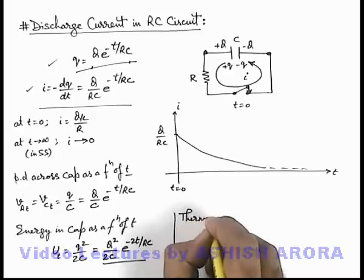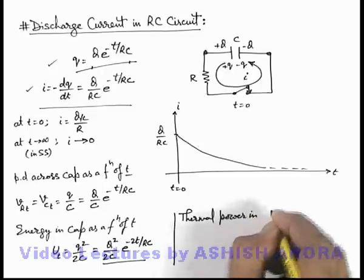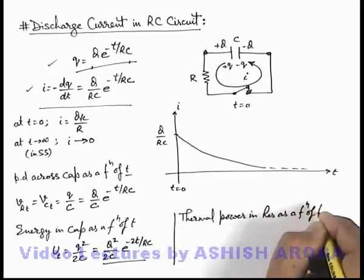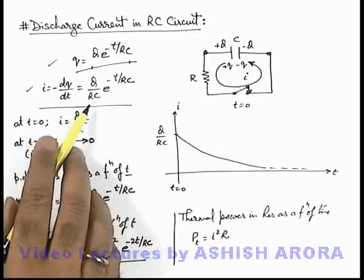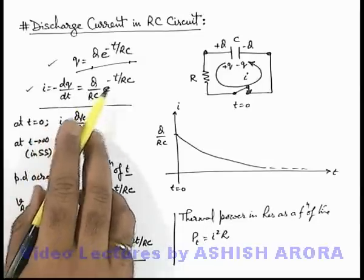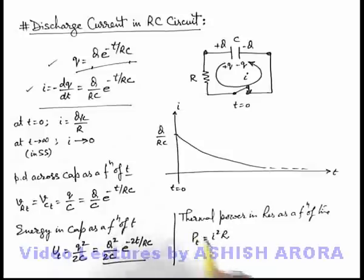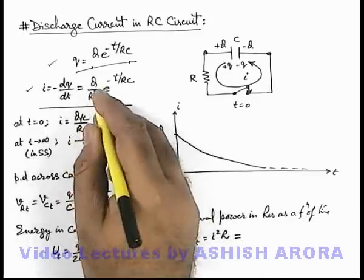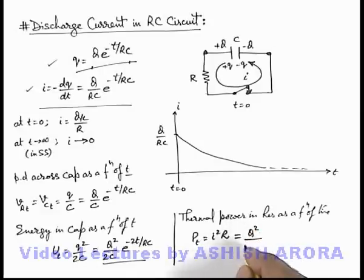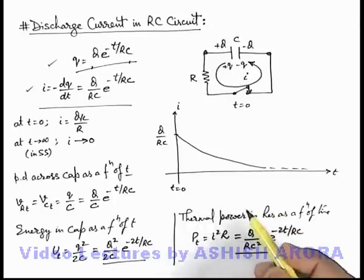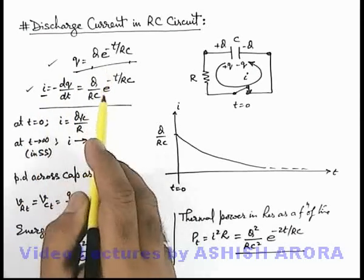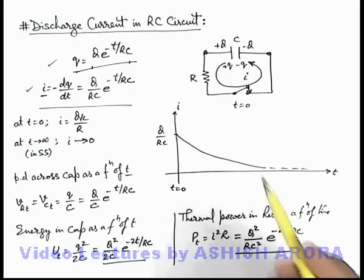Similarly, if we calculate the thermal power in the resistance as a function of time, this thermal power can be directly written as i²R. The value of current is Q/(RC)·e^(-t/RC). Substituting and squaring, the thermal power becomes Q²/(RC²)·e^(-2t/RC). This is the thermal power produced in the resistance as a function of time. Like this, if you know the charge on the capacitor and current in the circuit as a function of time, you can calculate all major parameters of the circuit directly.